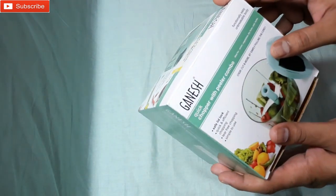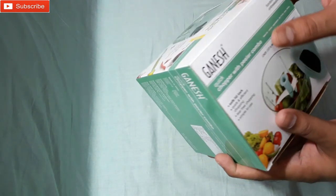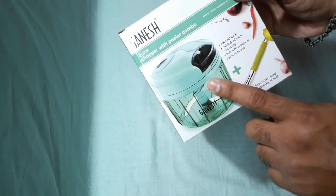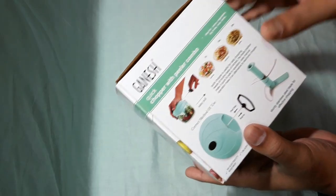Here you can see the brand name - it's Ganesh. And here you can see 'Quick Chopper with Peeler Combo,' so you'll get a peeler too just like this. And that's the vegetable chopper. On this side you